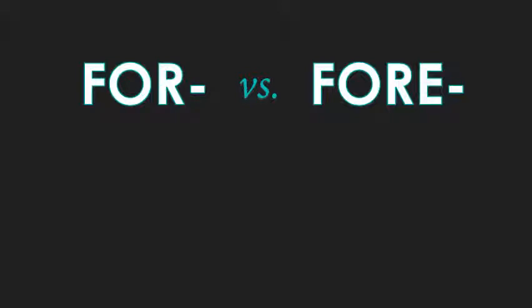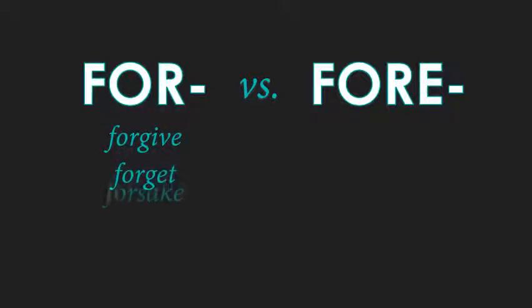So when you see 'f-o-r-e,' a lot of times it has to do with something that happened before, previously. Let's look at some examples: forgive, forget, forsake, forbear. If you forgive someone, you're giving away the guilt you're holding over them — you're giving them their freedom for whatever bad thing they did to you. If you forget, your memory is getting away from you — you had something in your head and then it's gone.